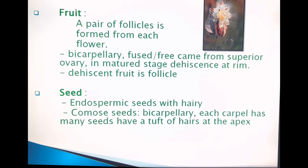After pollination, the flower is modified as a fruit. This fruit is a pair of follicles formed from each flower. The ovary nature — already discussed in the previous topic — is bicarpellary. In the maturing stage, it dehisces at the rim. This dehiscent fruit is known as a follicle.